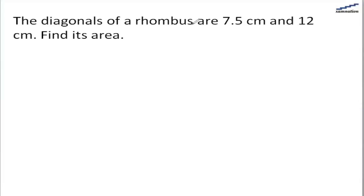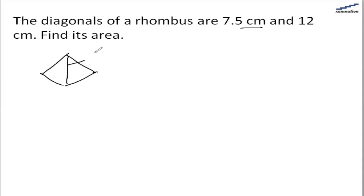We are given the diagonals of a rhombus which are 7.5 cm and 12 cm. We need to find out the area.